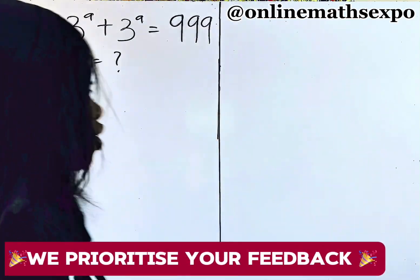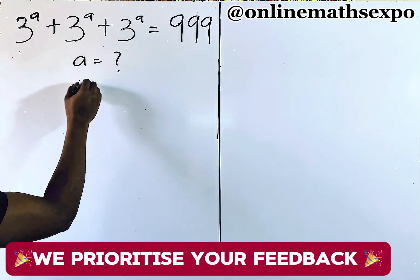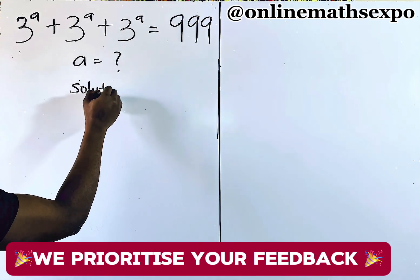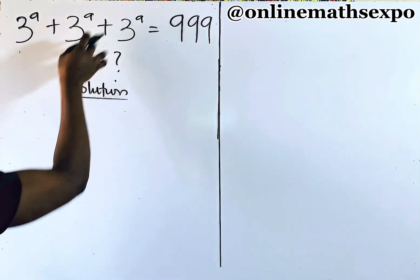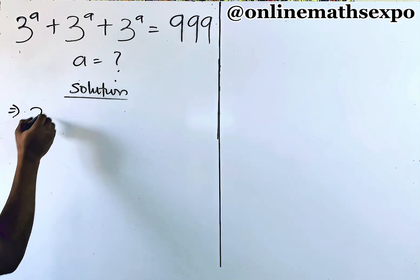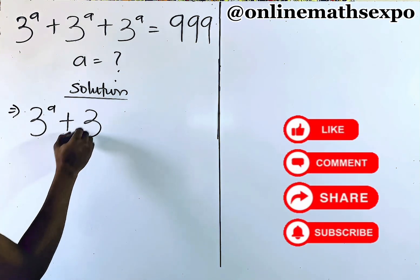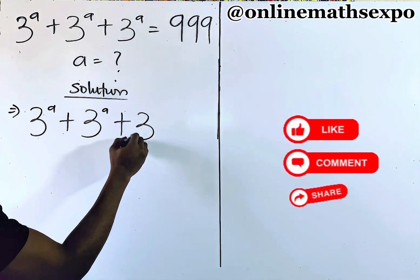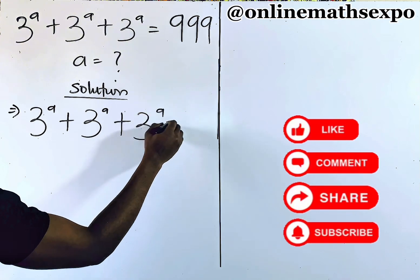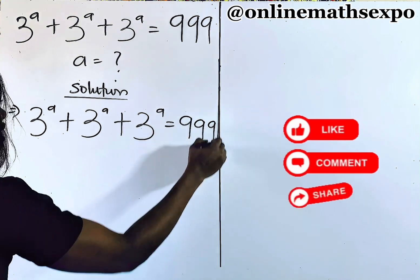So we're going to begin with our solution. Let's repeat what we have: 3 to the power of a, add 3 to the power of a, add 3 to the power of a, is equal to 999.